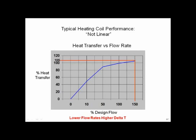Going up to a high delta T means my return water temperature is colder — that means my condensing boiler is more efficient. How do we make sure that happens? Maybe this is a good application for a pressure independent control valve — PICs — which we'll talk about later. We want that big delta T; we want the water as cold as possible. By modulating down, we get colder return water and push toward that 97%, 98%, 99% boiler efficiency we're after.